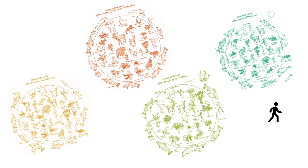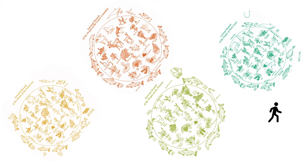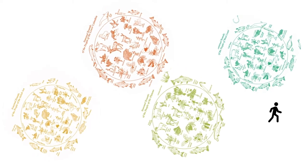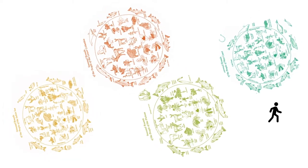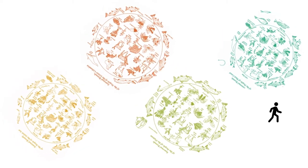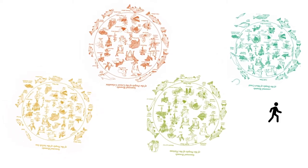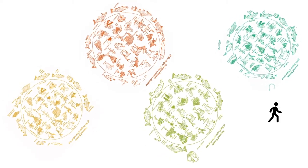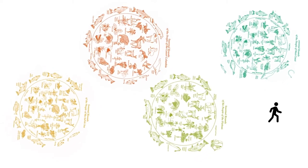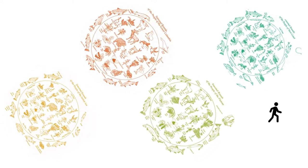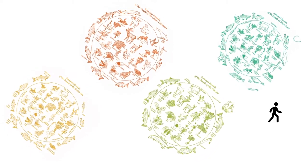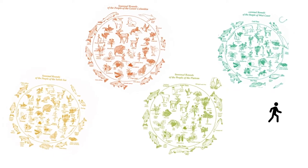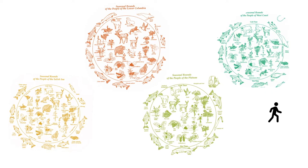Here are the four seasonal rounds that we see in Cascadia. I have them rotating so you can understand how the seasonal round works and how they work together — they all work simultaneously, so you're going to see a lot of common resources and then some unique resources as well.